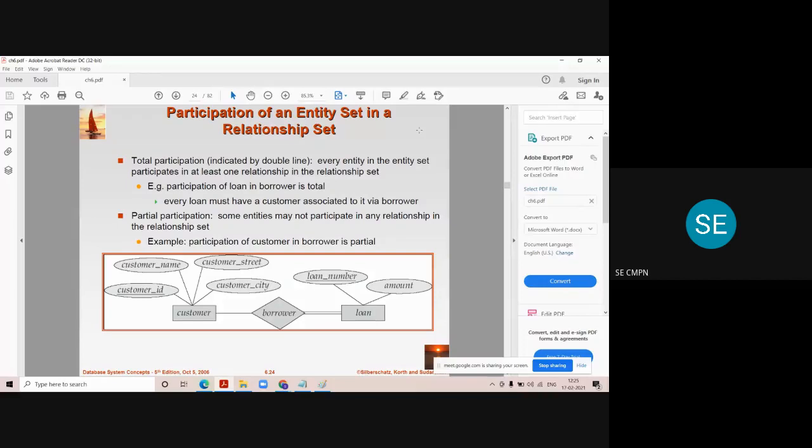We represent total participation by double line in the ER diagram like this. You see from borrower to loan there is double line and the partial participation is represented by single line. To understand this we'll see the example now.